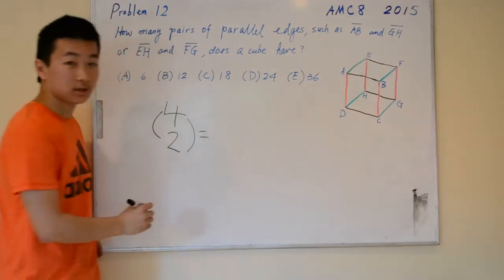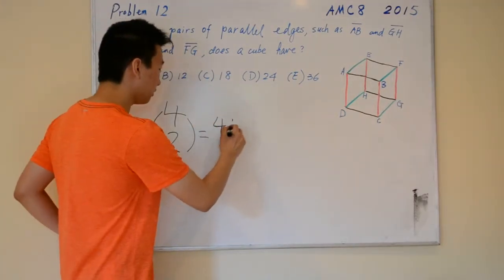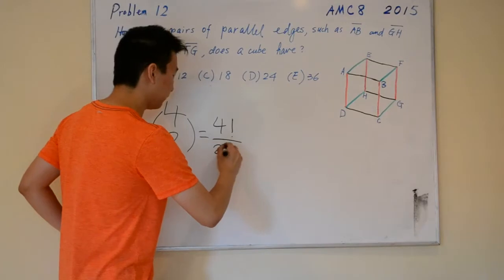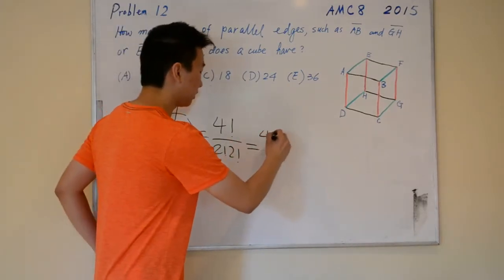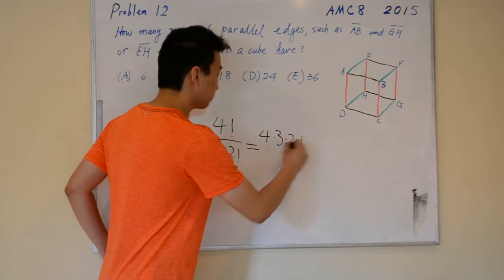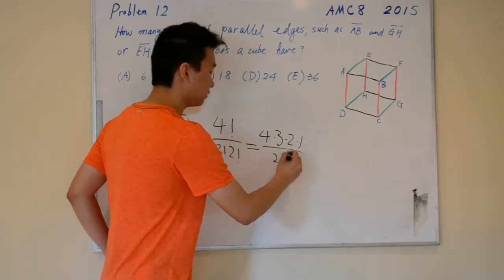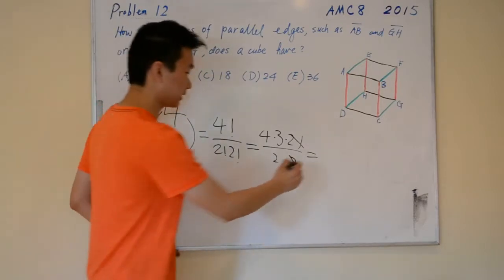This simplifies to 4 factorial over 2 factorial, 2 factorial, equals 4 times 3 times 2 times 1, over 2, over 2. So this simplifies to 6.